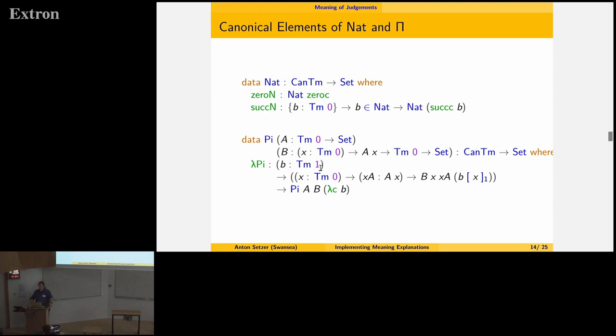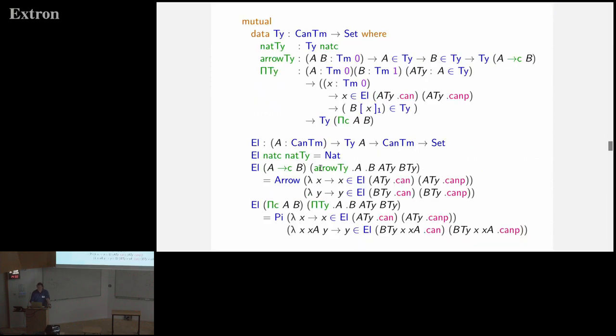And now we can define the canonical elements of natural numbers and pi types and other types. Let's look at the natural number. And it's quite interesting here. Normally, when you define natural numbers in type theory, you say 0 is a natural number, and if n is a natural number, then successor n is a natural number. So here we now have – we have a proof that 0 is a natural number, and if we have a term and a proof that B is a natural number, then the successor of it – we have a proof that successor of it is a natural number. And then we have something for pi.